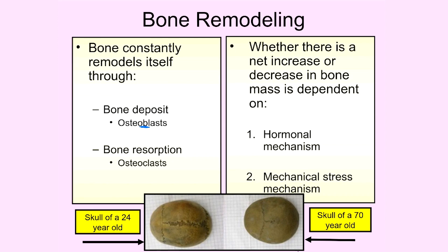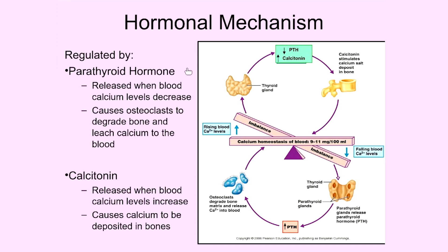Before getting into the hormonal mechanism, it's important to understand why the body needs it. Bones act as a calcium reservoir for the body. If the body is low on calcium, the bones will release it into the blood. If the body has sufficient levels of calcium, that excess calcium will be stored in the bones. So the bones are really a reservoir — we take calcium from them when we need it, and deposit calcium into them when we don't.